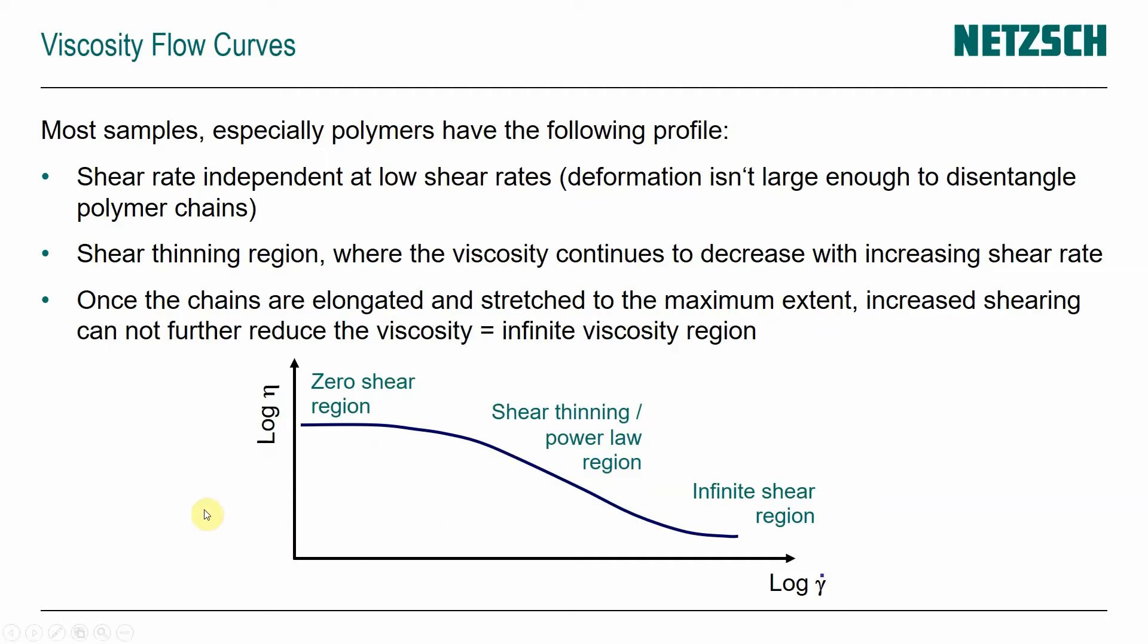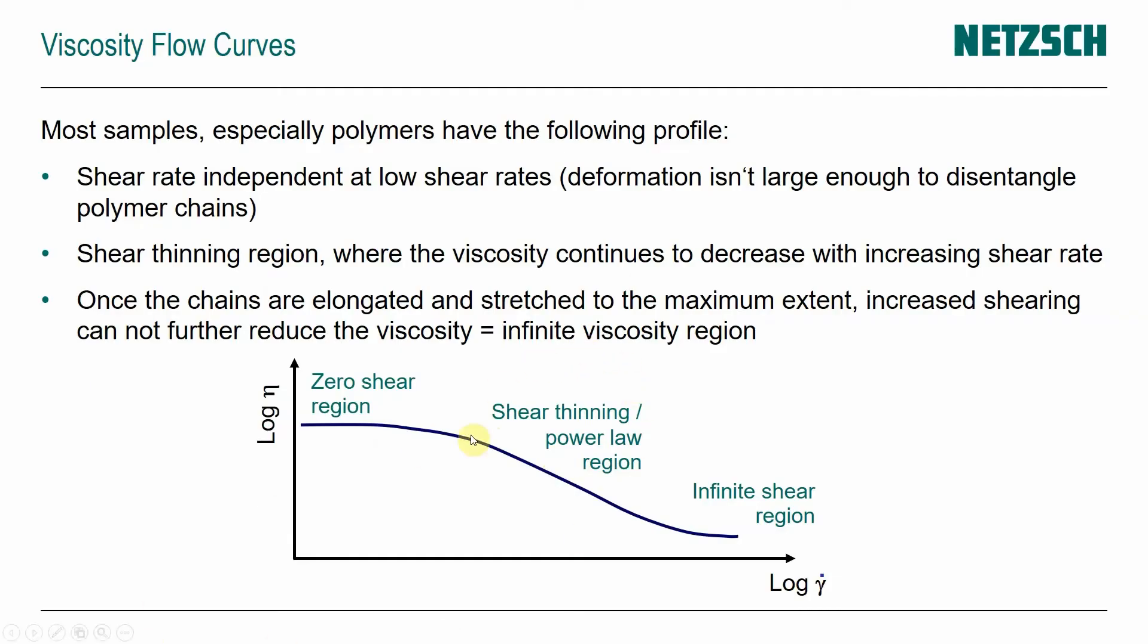So you remember the flow curve where we have at very low shear rates, we have a behavior that's independent of shearing, called the zero shear region, and then eventually as the molecular chains are flowing against each other, we see the shear thinning behavior, and we suspect that the material extrusion process or 3D printing process is also happening somewhere here.